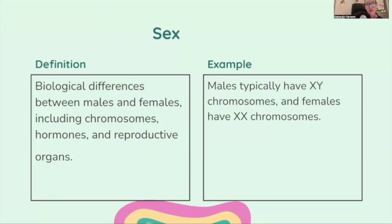Let's start with the definition of sex: the biological differences between males and females, including chromosomes, hormones, and reproductive organs. For example, males typically have XY chromosomes and females have XX chromosomes.